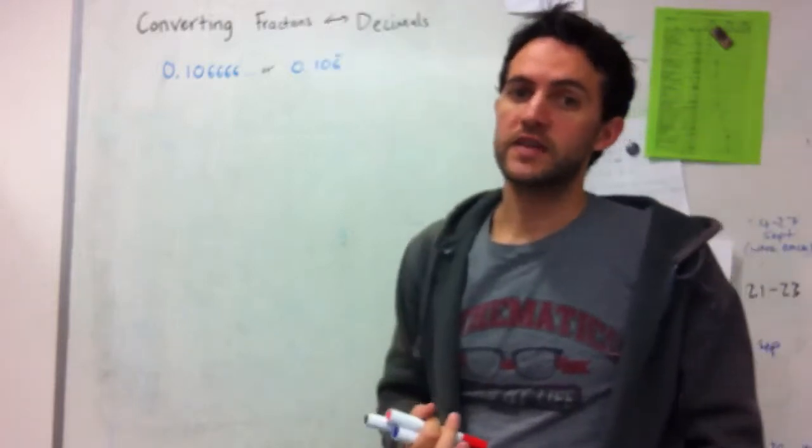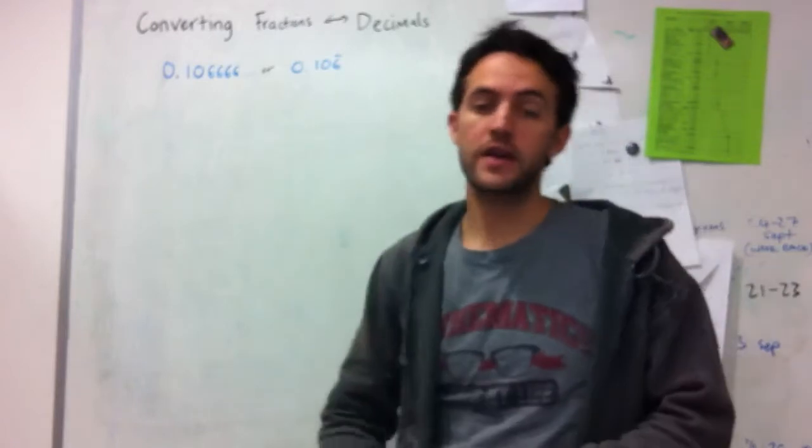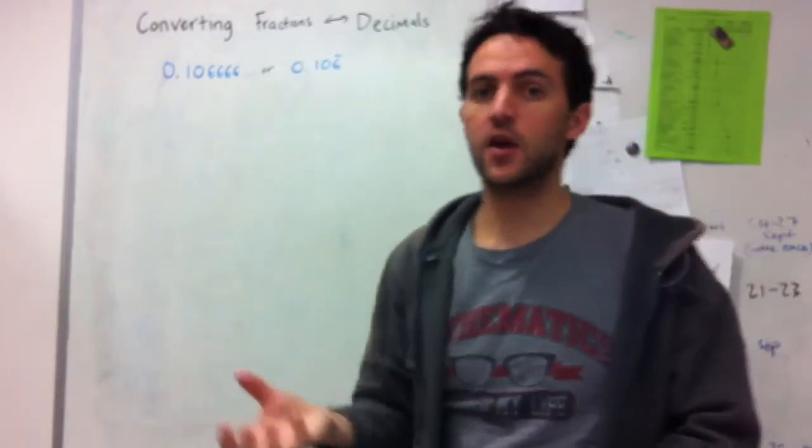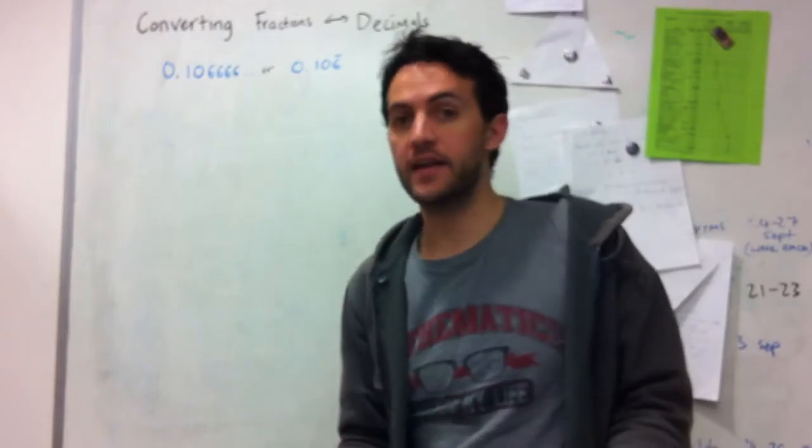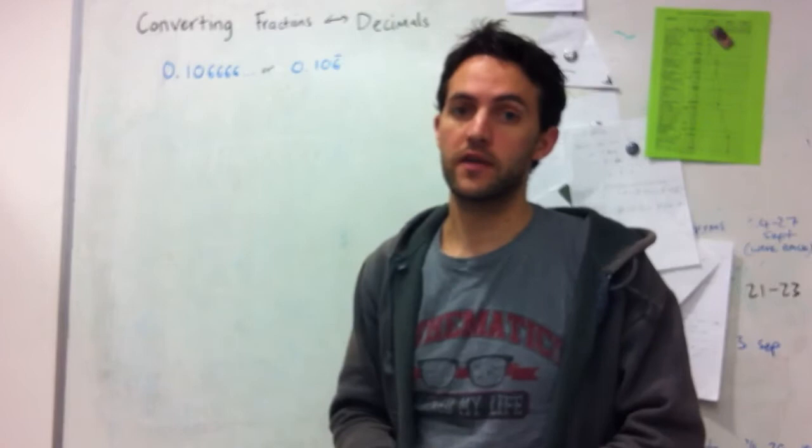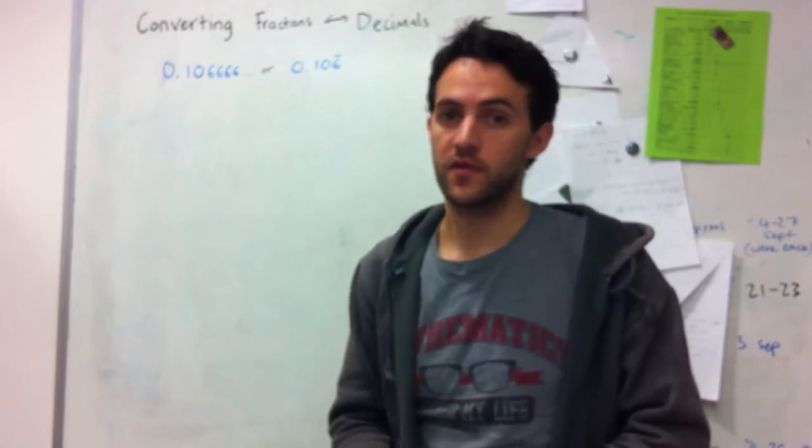One of the trickier things that we did this week was look at how to convert a recurring decimal into a fraction. When it's a terminating decimal, it's not too bad. We just write it over the power of 10 represented by the last column it's in, and then we go through a process of simplification.